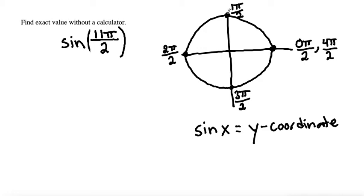If we keep going around, this would be 5π/2, then 6π/2, 7π/2, 8π/2, 9π/2, 10π/2, and 11π/2. We finally get to our special point of 11π/2.